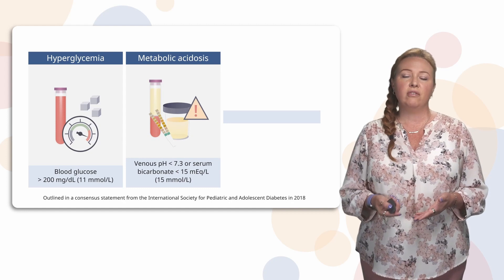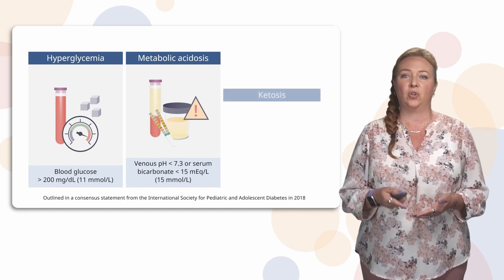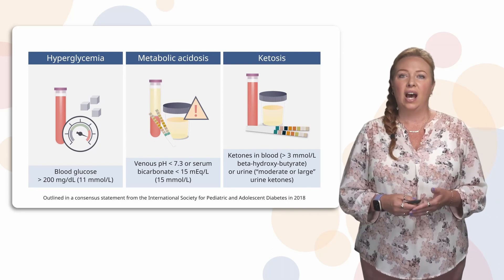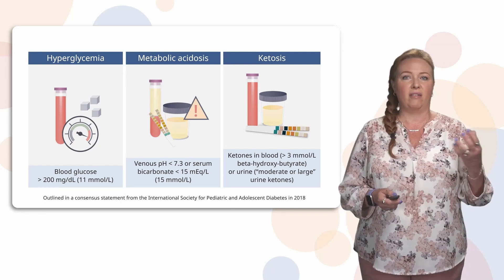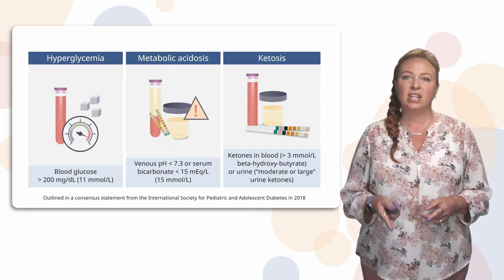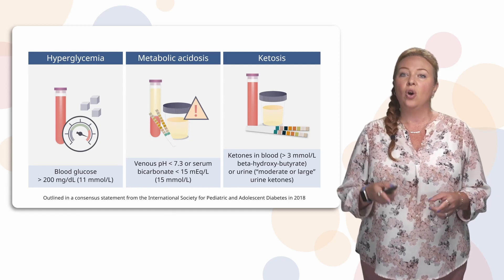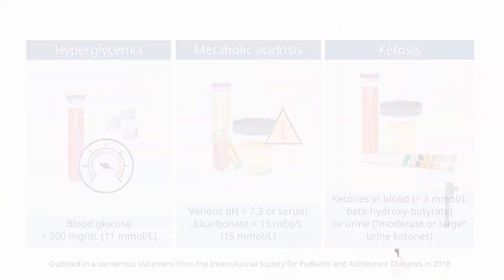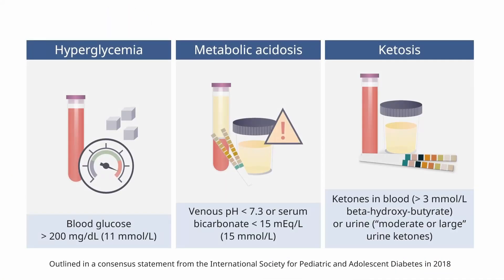The last thing we're looking for in DKA is ketosis — right there in the name: diabetic ketoacidosis. You have acidosis and you have ketosis. The presence of ketones in the blood or the urine. If you are measuring ketones in the blood, you're measuring beta-hydroxybutyrate — you'll get used to seeing that term. And when measuring ketones in the urine, that's when you're dipping the urine and looking for those ketones.